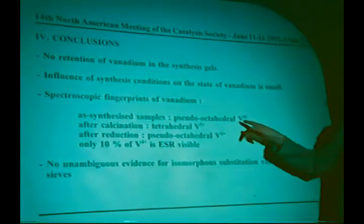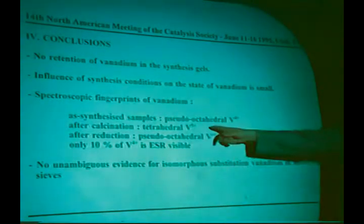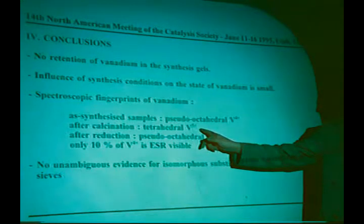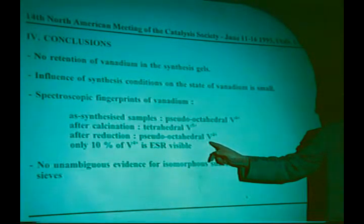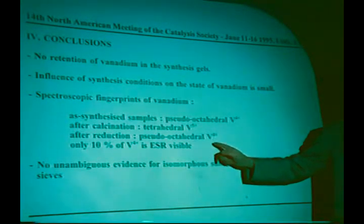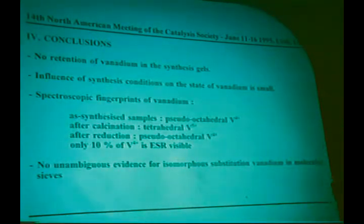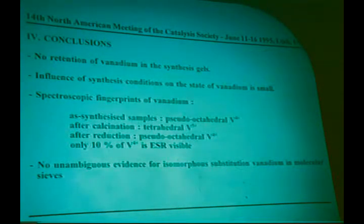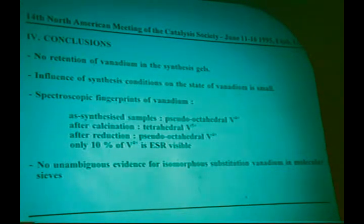In the case of as-synthesized samples, we have pseudo-octahedral vanadium 4+. After calcination, tetrahedral vanadium 5+. And after reduction, pseudo-octahedral vanadium 4+. It's important to stress that with EPR, you can probe only 10% of the total vanadium content, whereas with diffuse reflectance, you're probing the total vanadium content. We have no unambiguous evidence to support a really isomorphous substituted vanadium—vanadium surrounded by four oxygens of the lattice.